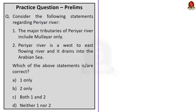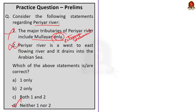The second question is about Periyar River. Statement 1 says major tributaries include Mollayar and Wanli — this is incorrect; the major tributaries are Mollayar, Cheruthoni, Perinjankutti, and Yadamala rivers. Statement 2 says Periyar is a west-to-east flowing river draining into the Arabian Sea — the second part is correct but it is actually an east-to-west flowing river. The correct answer is option D: neither statement one nor two.